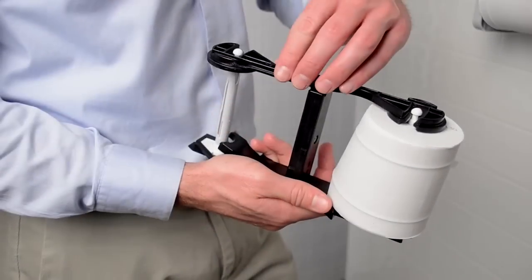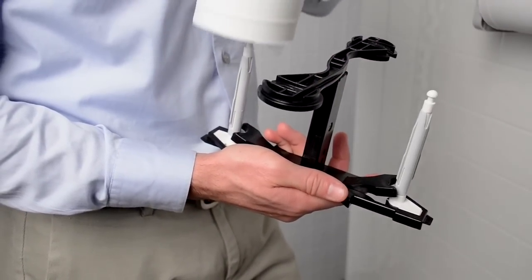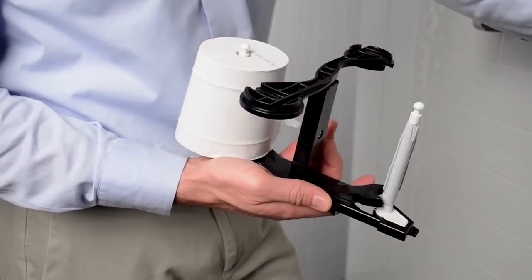Remove the partially used roll from the top slot, placing it instead in the bottom slot. Load a new roll in the top slot.